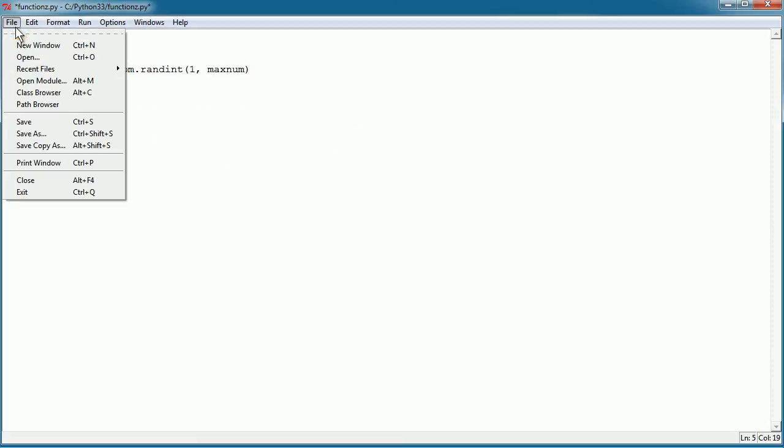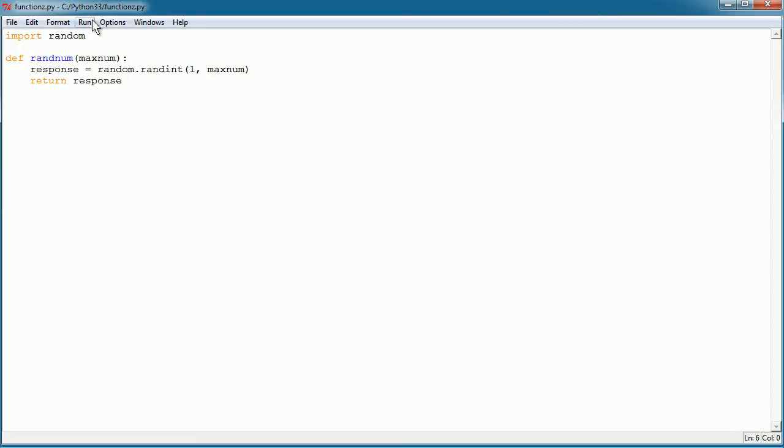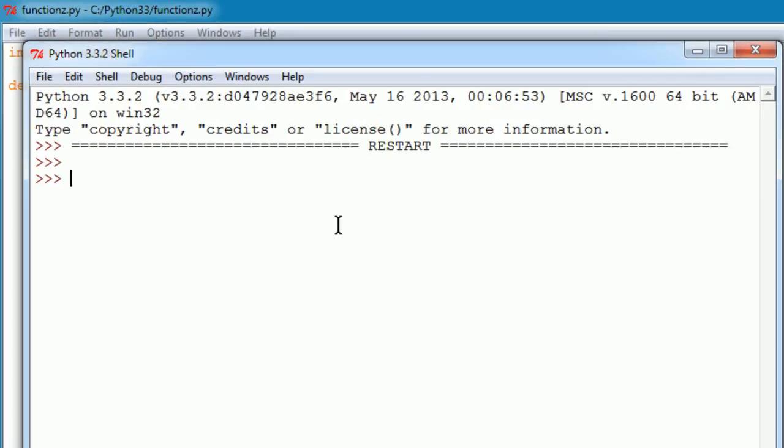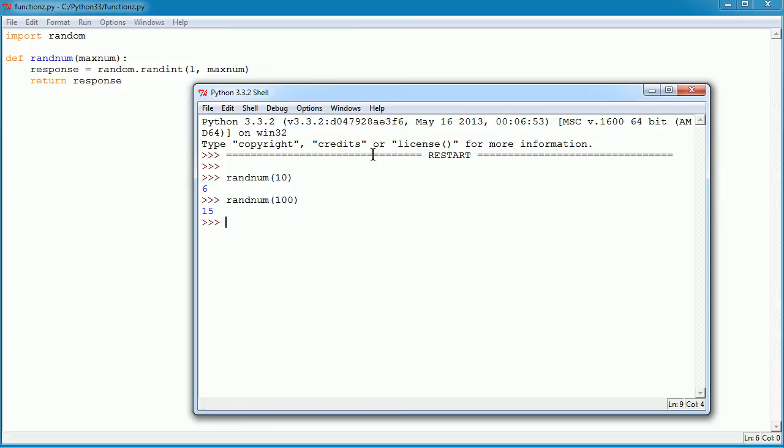Okay. So let's do a file save. Now let's test it. We'll choose run, run module. And let's invoke the function randnum and we'll pass in our argument. Let's say we want the maximum number to be 10 - generated six. Let's choose 100 and it gives us 15. You see? So that in a nutshell is the distinction between a parameter and an argument.